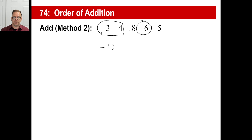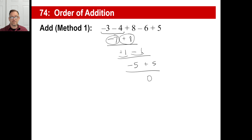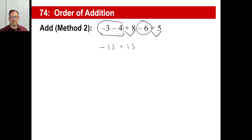Now let's get the positives together. Eight plus five is thirteen. Now we have a situation where these are opposites — we subtract the absolute values. Thirteen minus thirteen is zero, which is of course the same thing we just got a minute ago. Either one of those methods you can do — whichever one you like better.